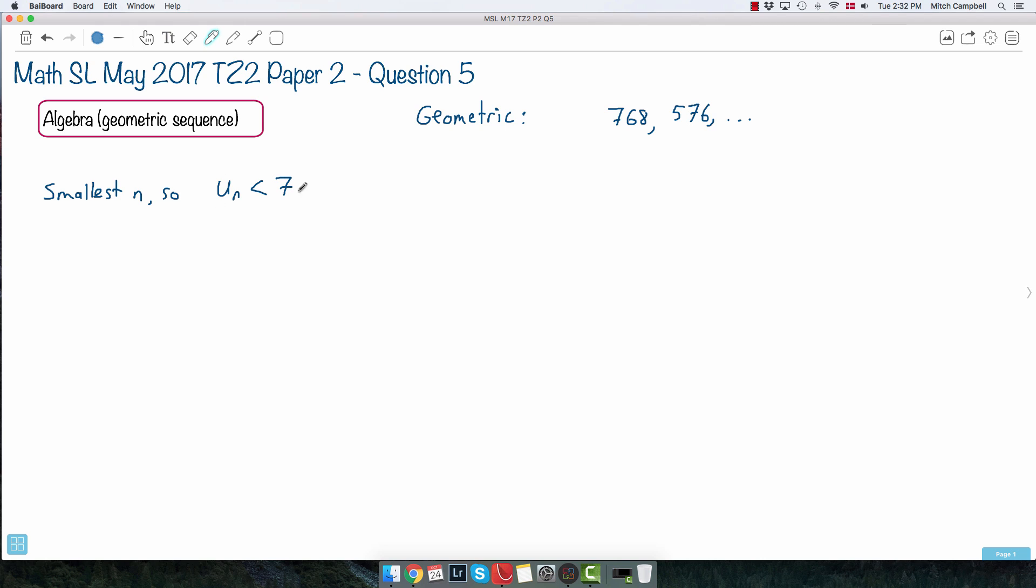Now maybe that sounds really complicated, so maybe what we'll do is we'll start off by just finding out what is un for this geometric sequence. It helps to remember what a geometric sequence even means. Remember what it means to be geometric? There's a common ratio. And that ratio is called r.